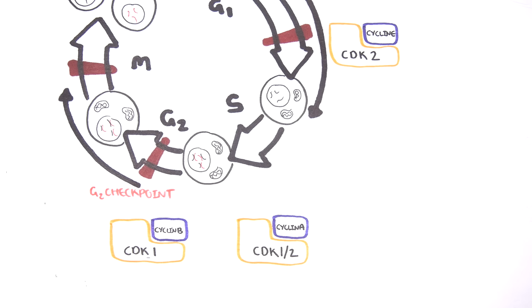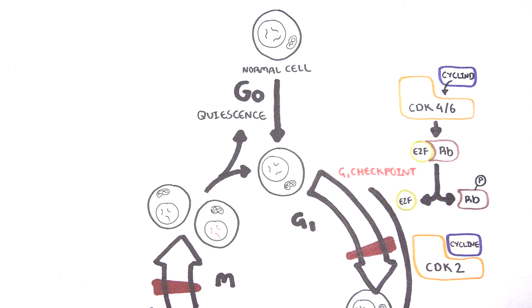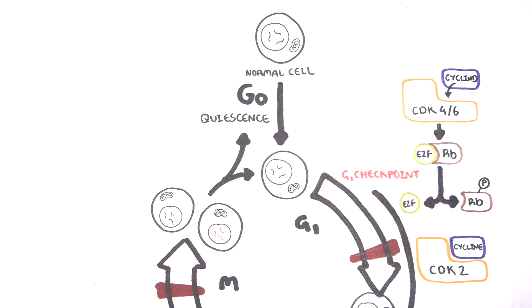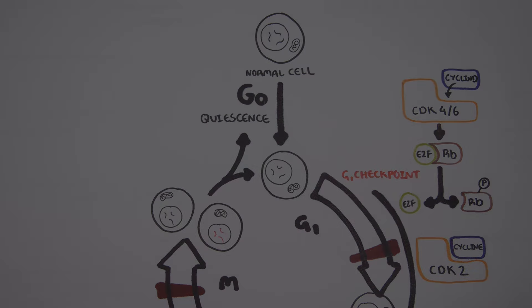If you have too low amounts of CDK and cyclin, the cell doesn't progress through the cell cycle. But if you have too much cyclin and CDK, you get cells that continuously enter the cell cycle, giving you uncontrolled growth — and this is one of the mechanisms of cancer. What can cause an increase in CDK and cyclin? This is where genetic mutations come in — the mechanism of cancer.